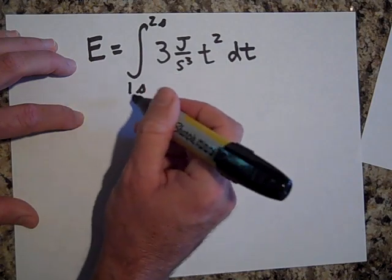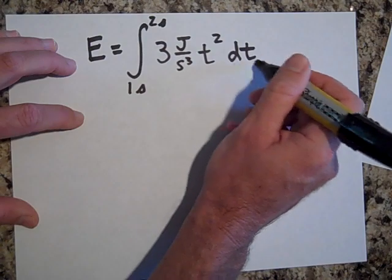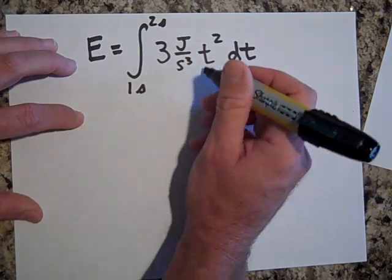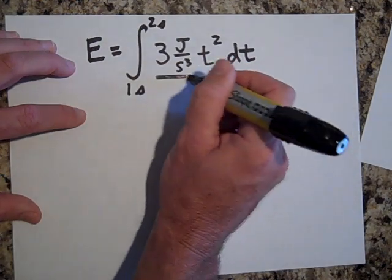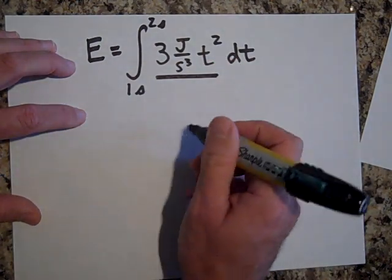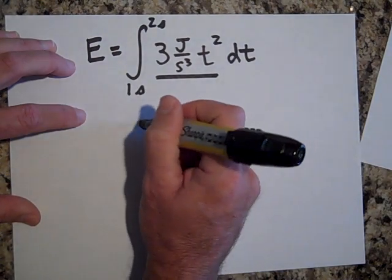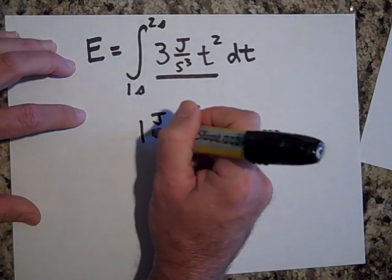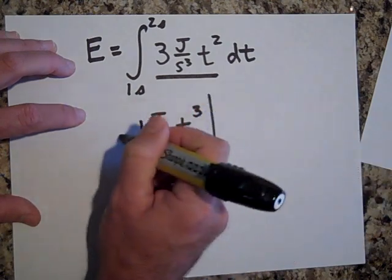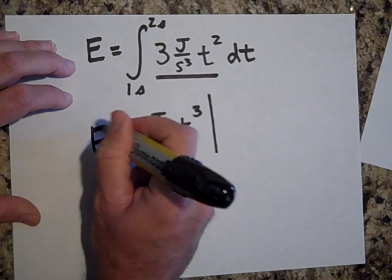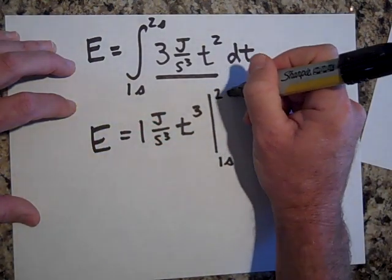Notice that my boundary conditions have to be in the same unit as my differential. So I'm going to take the anti-derivative of this integrand right now, and so that's going to be t cubed, and this just turns into one joule over seconds cubed, and my boundary conditions are one second and two seconds.